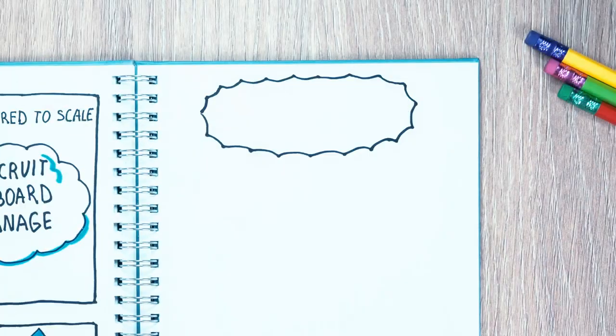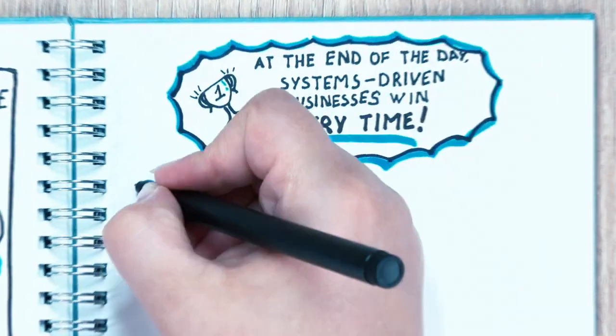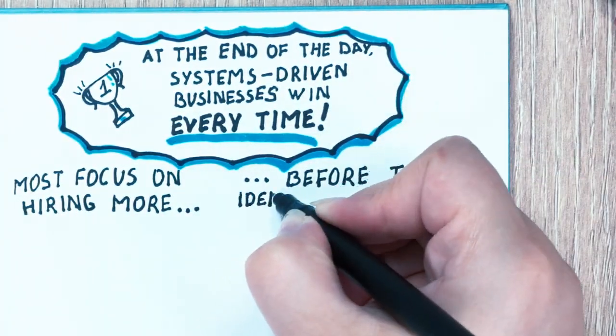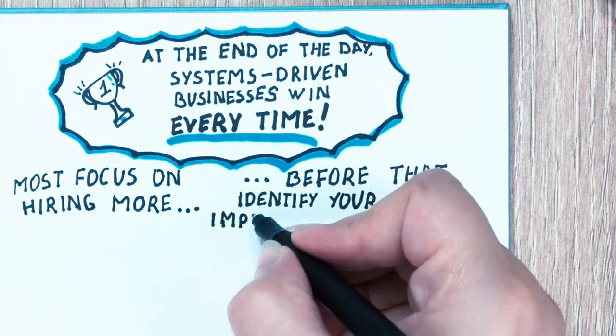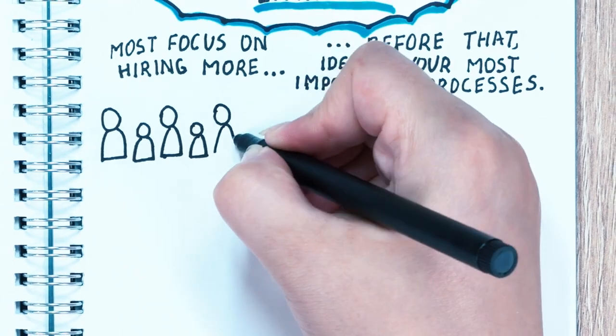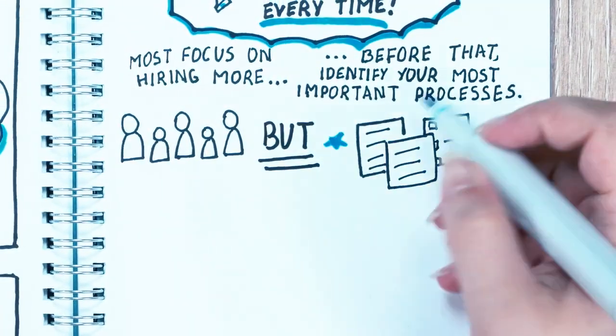At the end of the day, systems-driven businesses win every time. Some companies just focus on hiring more staff to get more output, but before that, you have to think about what your most important processes are. Don't let your team waste precious time by working on the wrong things or making unnecessary mistakes, and that's where processes come in.